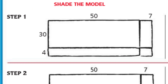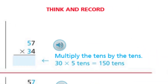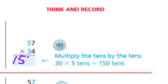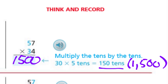Let's look at step one — it says shade the model. On the other side we have think and record. Here we're going to multiply the tens by the tens: 30 times 5 tens is equal to 150 tens, so that's going to be 1,500. Because 150 tens is the same as 1,500. And now we shade that part of the model.